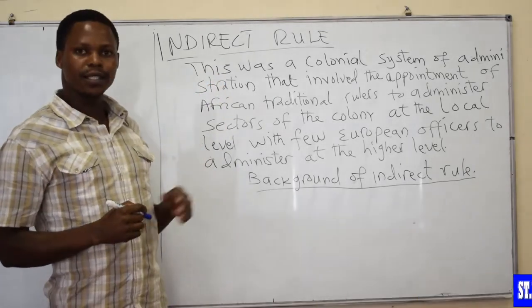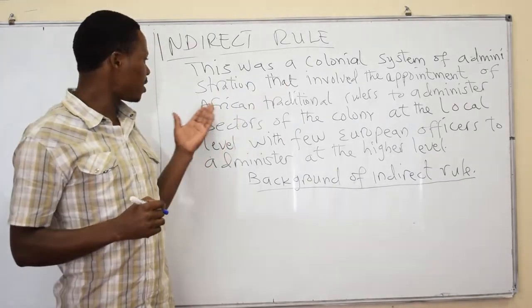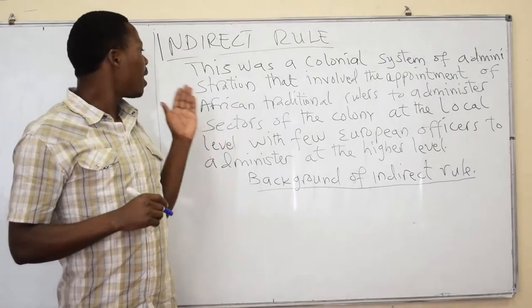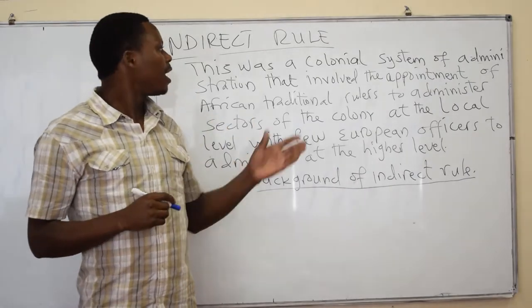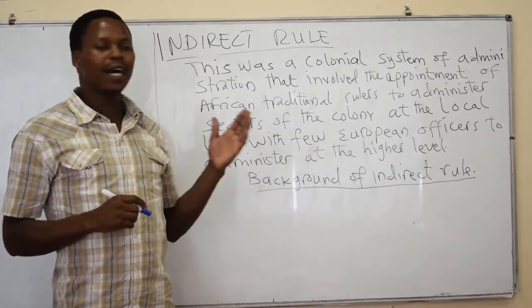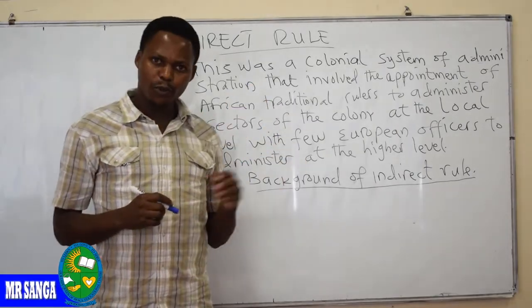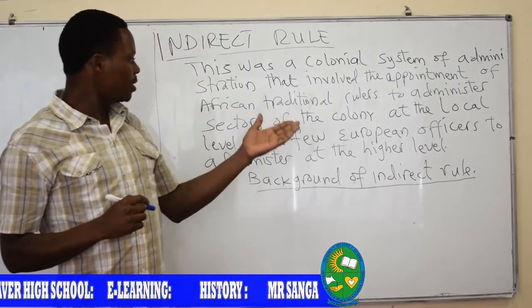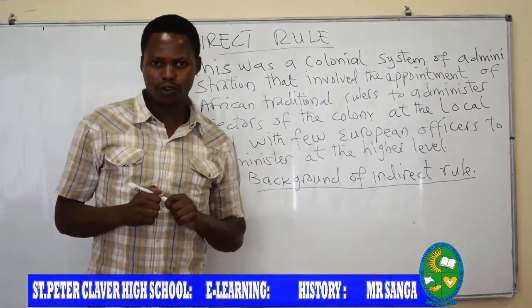Indirect Rule, by definition, was a colonial system of an indigenous church that involved the appointment of African traditional rulers to administer sectors of the colony at the local level, with few European officials or officers to administer at the higher level.